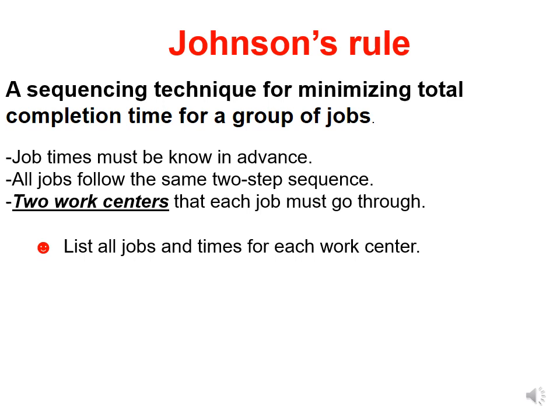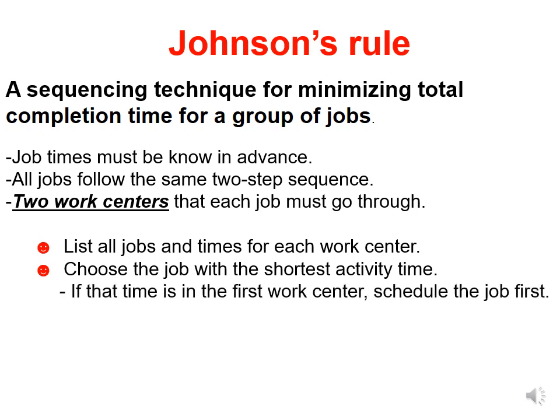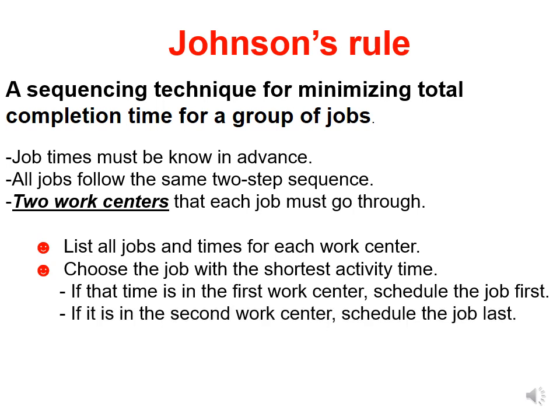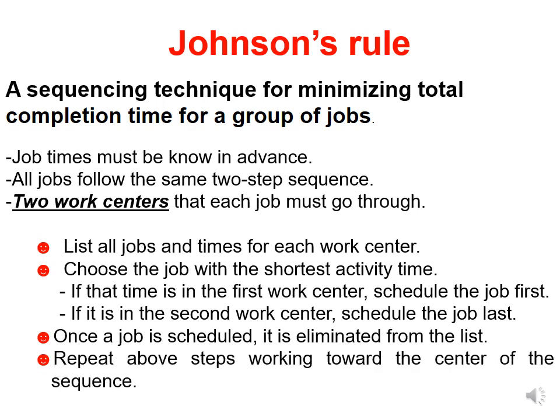The steps of Johnson's Rule: list all jobs and times for each work center or machine. Choose the job with the shortest activity time. If that time is in the first work center, schedule the job first; if it is in the second work center, schedule the job last. Once the job is scheduled, it is eliminated from the list. Repeat these steps working toward the center of the sequence.